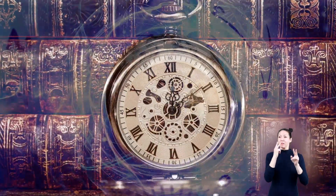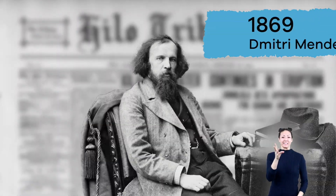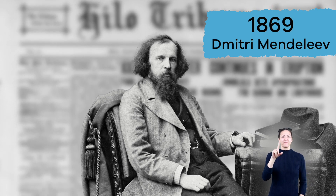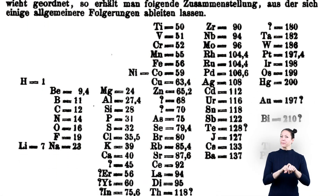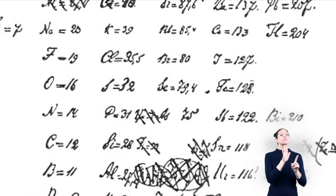Let's go back in time for a minute. Way back in the year 1869, a Russian chemist named Dmitri Mendeleev tried to organize elements into a grid or table. At the time, only 65 elements had been discovered, and Mendeleev decided to order them by weight. He also decided to group elements with similar properties or reactions in the same column.